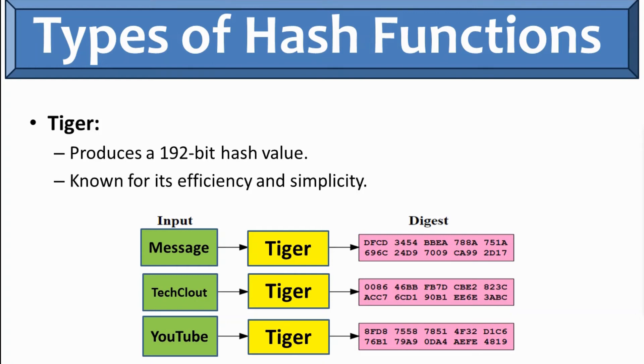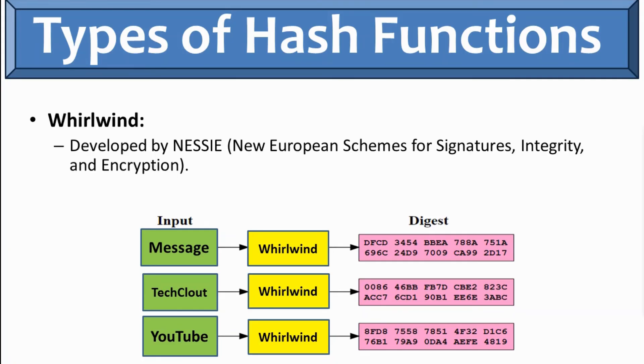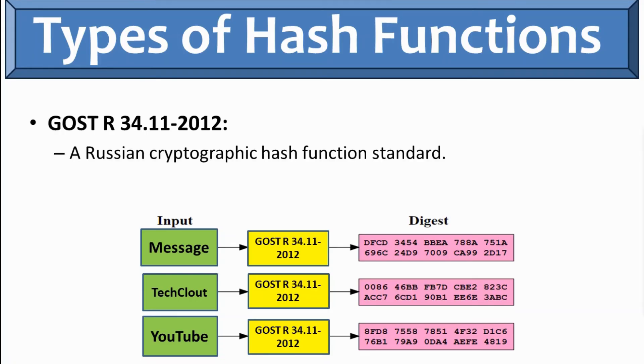Then we have Whirlwind, which was developed by New European Scheme for Signature Integrity and Encryption, and it produces the hash value of the variable length. Then we have GOST R. GOST R 34.11-2012. It is the Russian cryptographic hash function standard and it is a part of Russian cryptographic standards.